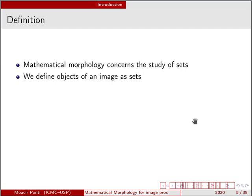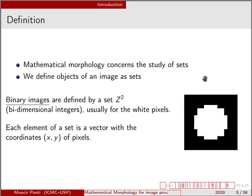This technique concerns the study of sets, so it is based mostly on set theory. In order to process images, we have to define the objects of an image as sets. The most simple scenario is to study binary images. In this case, we are going to define those binary images as a set in Z², meaning we have bidimensional integers, usually defining the white pixels of an image.